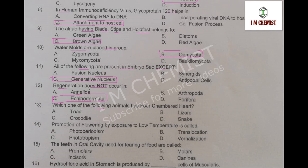MCQ number 13: which of the following animals has a 4-chambered heart? Various options are given like toad, lizard, snake, and crocodile. The right option is crocodile, option number C.